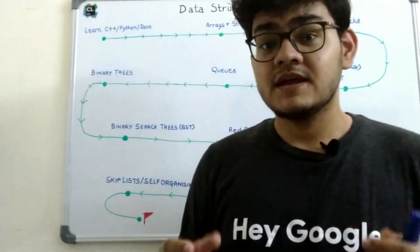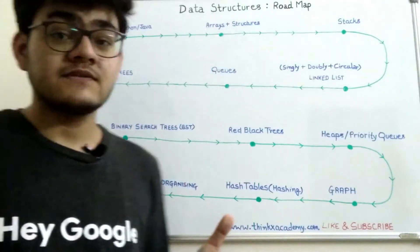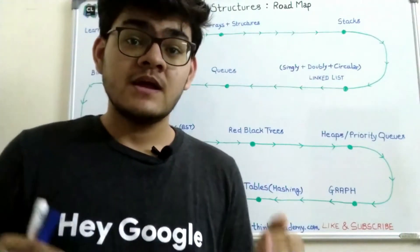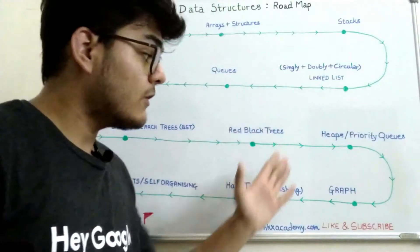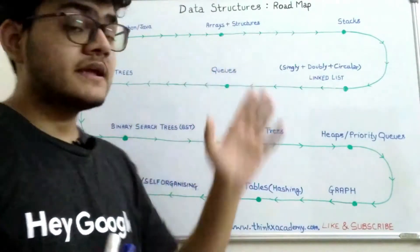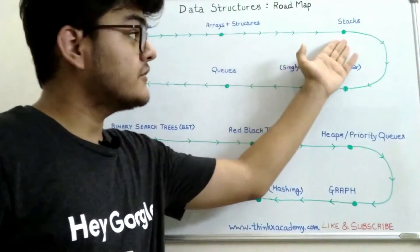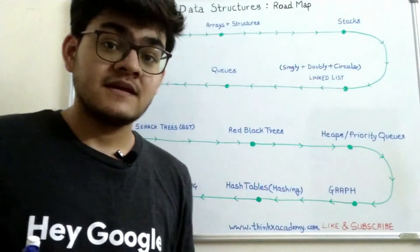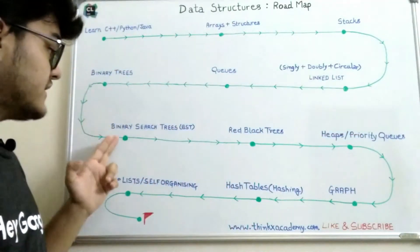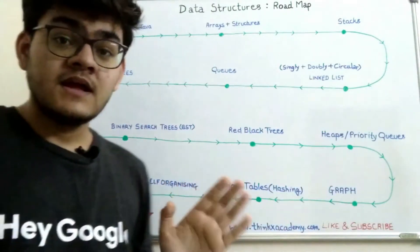The next step is to learn arrays and structures. This part also includes the object-oriented programming approach, because you are going to use this approach in all the data structures we will cover. After mastering arrays, structures, and OOP, you will move to the first data structure: stacks. Then you move on to linked lists, queues, binary trees, binary search trees, red-black trees, heaps, graphs, and so on.